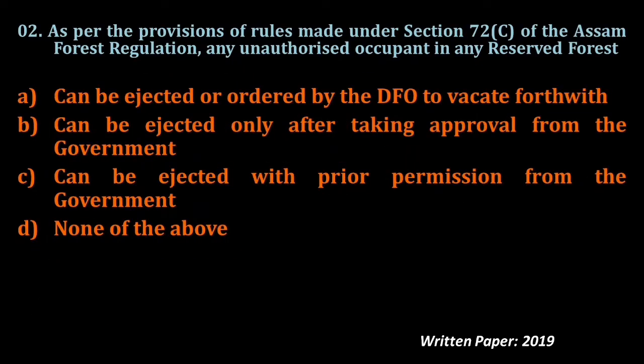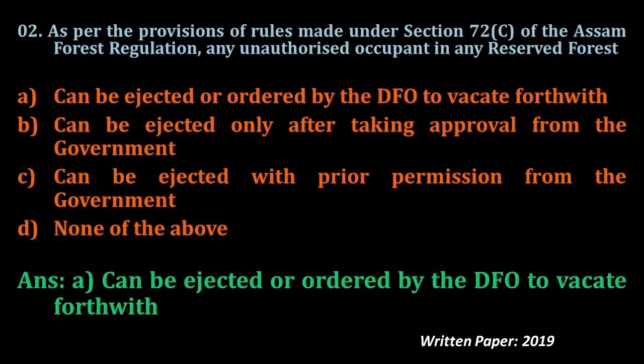Question number two: As per the provisions of rules made under Section 72, subsection (c) of the Assam Forest Regulation 1891, any unauthorized occupant in any reserve forest — option A: can be ejected or ordered by the DFO to vacate; option B: can be ejected only after taking approval from the government; option C: can be ejected with prior permission from the government; option D: none of the above. The answer is A — the DFO can directly order ejection without taking any approval or prior permission from the government.